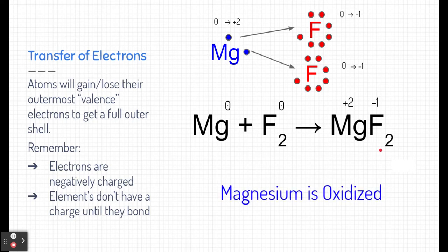Here we can see magnesium is being oxidized. Remember, oxidation is the loss of electrons. Fluorine is being reduced. Each of them are because reduction is gaining electrons.